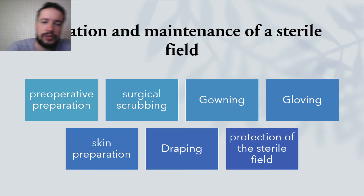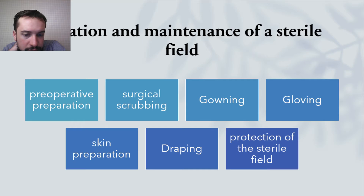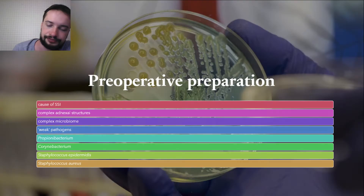The creation and maintenance of a sterile zone for the operation is a fundamental intent of modern surgery. This section covers preoperative preparation, surgical scrubbing, gloving, skin preparation, draping and protection of the sterile field. These principles apply to all types of wounds but may need to be adapted to particular circumstances.